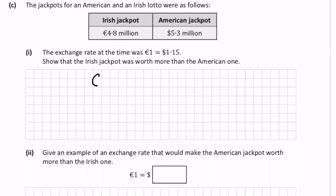So we set up a ratio table, converting euros on the left hand side into dollars on the right hand side. So what we know is 1 euro is worth 1.15 dollars.